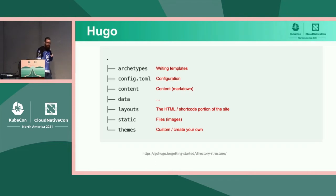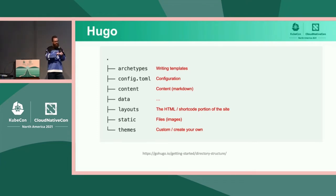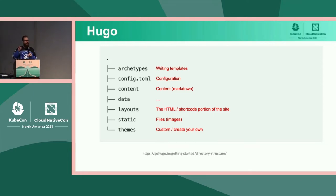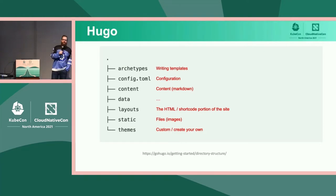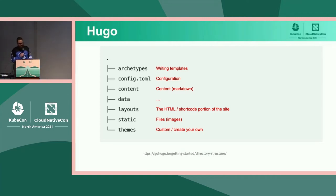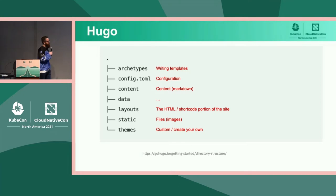Layouts is the HTML and shortcode portion of the site. One of the really awesome, powerful things about Hugo is that you can templatize and break apart many different chunks. When you're writing a web page, all you need is to understand Markdown and contribute to that Markdown component — it gets generated into HTML, and all the magic behind the scenes is in layouts. The static directory contains files and images — JavaScript, CSS, things that aren't going to change, like images. Themes is not a required piece of Hugo; you can write your own or use community ones. Having a themes directory and a config.toml that points to it tells Hugo: when you build these pages, use these themes.